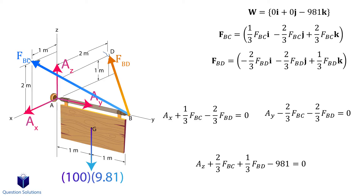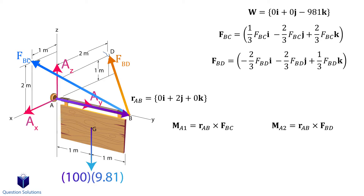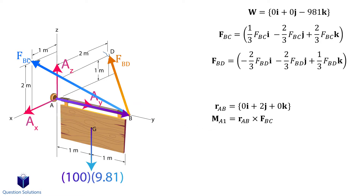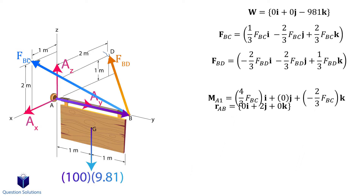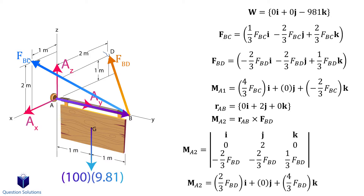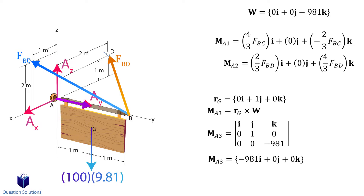Notice how we have three equations with four unknowns, so we need one more equation — that's going to be a moment equation written about point A. We first calculate the moment created about point A by the two wires. To do that we need a position vector from A to B, where the two wire forces start. We calculate each individual moment created by wires BC and BD. Then for the weight, we need a position vector from A to G — actually only to the vertical distance of point G along bar AB, because its line of action crosses the bar.